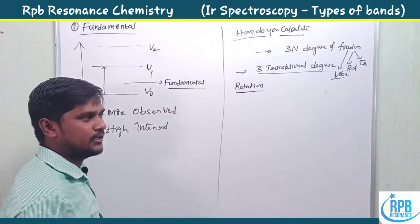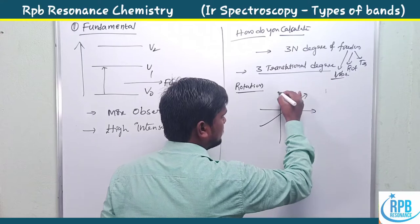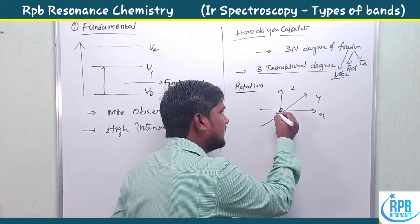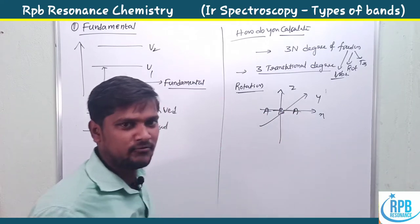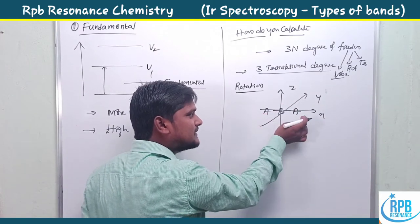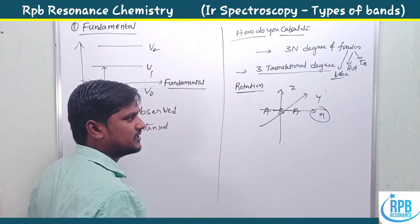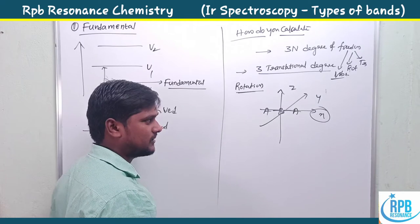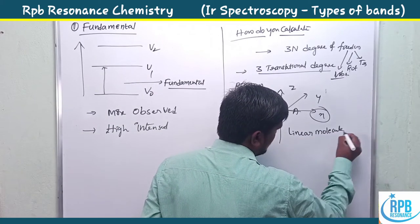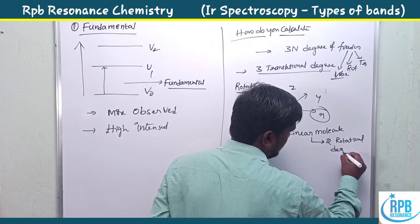For rotational degrees of freedom, there are two types. For a linear molecule along the X, Y, Z axes — if we rotate along X, we get the same position. But rotating along Y and Z gives two different rotations. So a linear molecule has two rotational degrees of freedom. For a non-linear molecule, rotation along X, Y, or Z axis gives three different rotations — so a non-linear molecule has three rotational degrees of freedom.